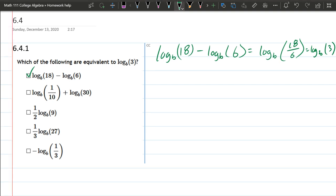The second one is log base b of one-tenth plus log base b of 30. This is addition outside is multiplication inside. One-tenth times 30.